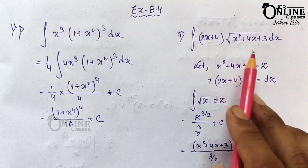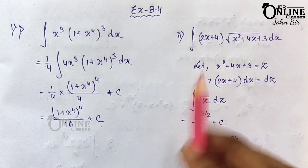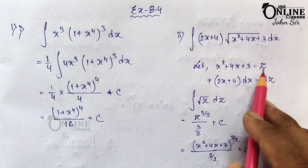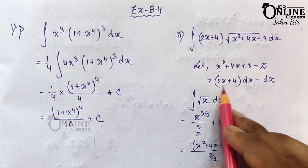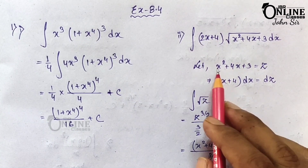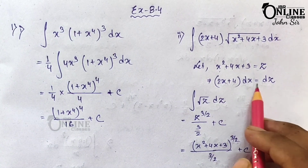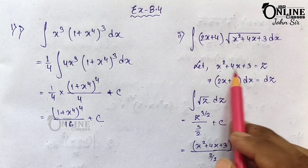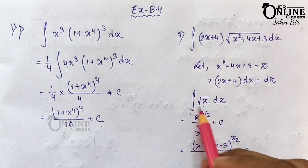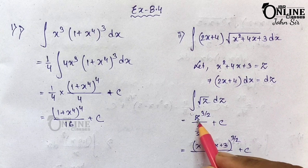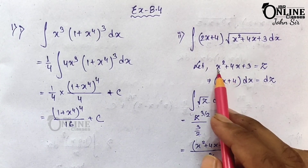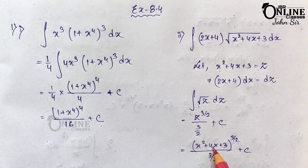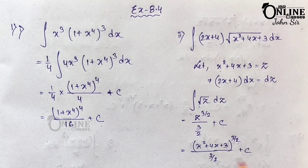Let x² + 4x + 3 = z. The derivative is 2x + 4, and 2x + 4 is already given in the integral. So (2x + 4)dx = dz. Replacing 2x+4 dx with dz and x²+4x+3 with z, the integral becomes ∫√z dz = ∫z^(1/2) dz = z^(3/2) / (3/2) + C. Substituting back: (x² + 4x + 3)^(3/2) / (3/2) + C.